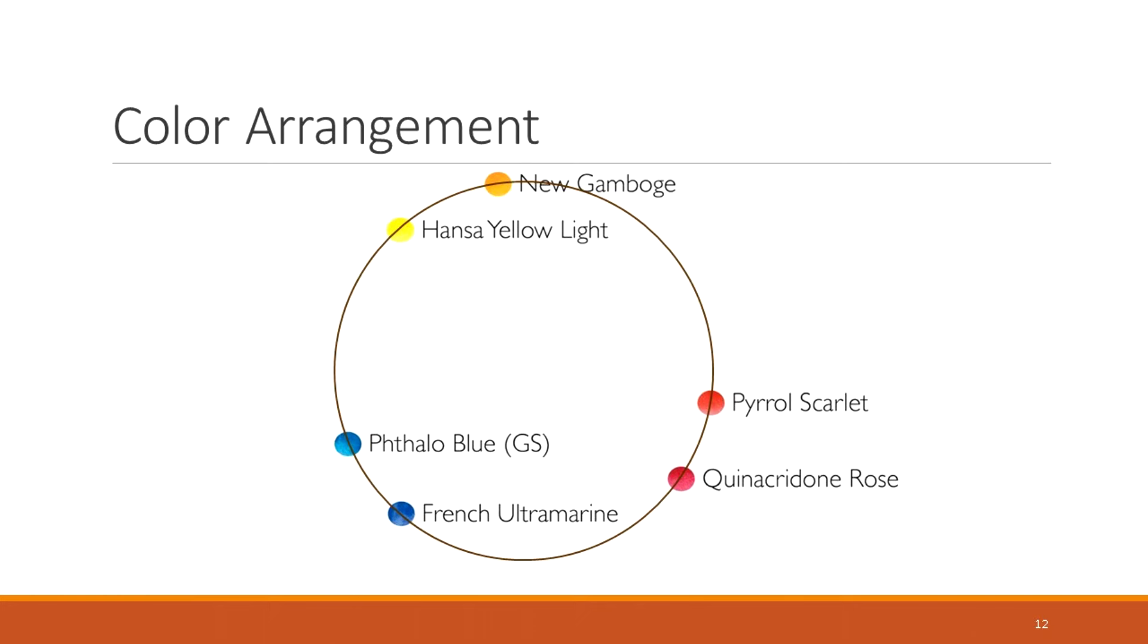If you were to swatch the Daniel Smith colors, they will end up in this arrangement, where the cooler colors like Hansa Yellow Light with Thalo Blue will be closer to each other. The New Gamboge, which is a warmer version of yellow, will be closer to red. And the French Ultramarine, which has a bit of red in it, will also be closer to the warmer side of blue, closer to red as well.